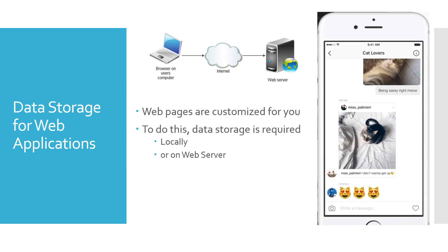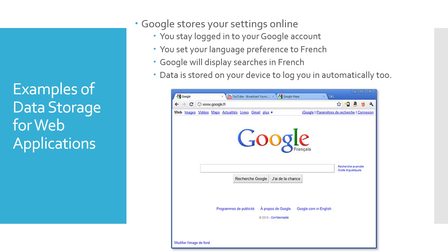Web pages are customized for you — made specially just for you, how you want and need them to be shown. For this to happen, data storage must occur either locally on your computer or at the web server. For example, Google stores your settings: if you log into your Google account and set your language preference to French, whenever you search, Google will display results in French, personalizing everything for you.